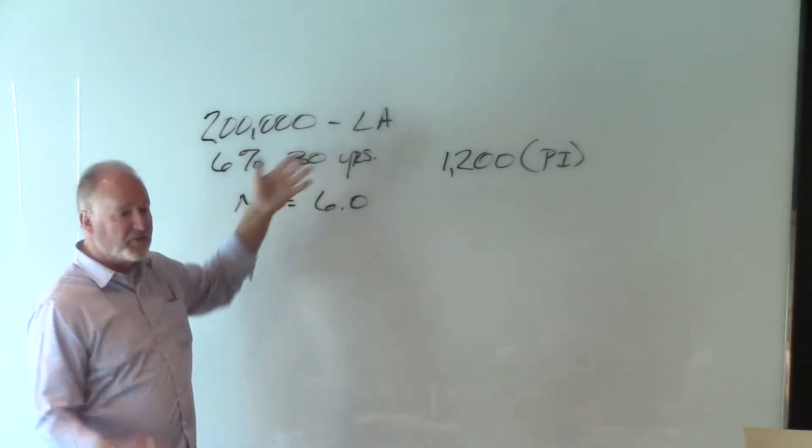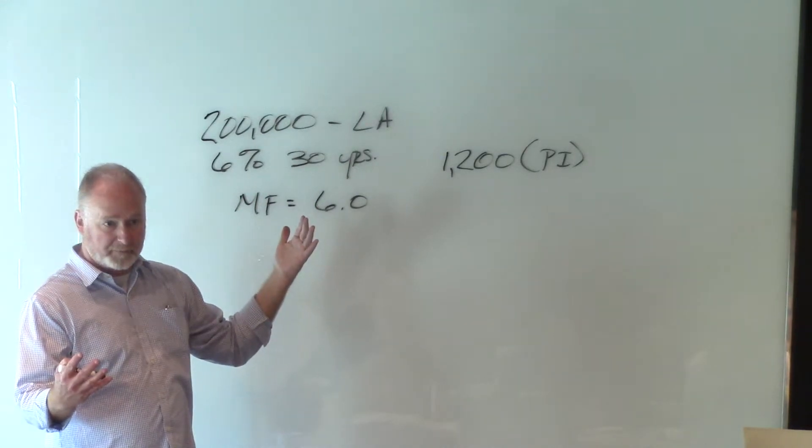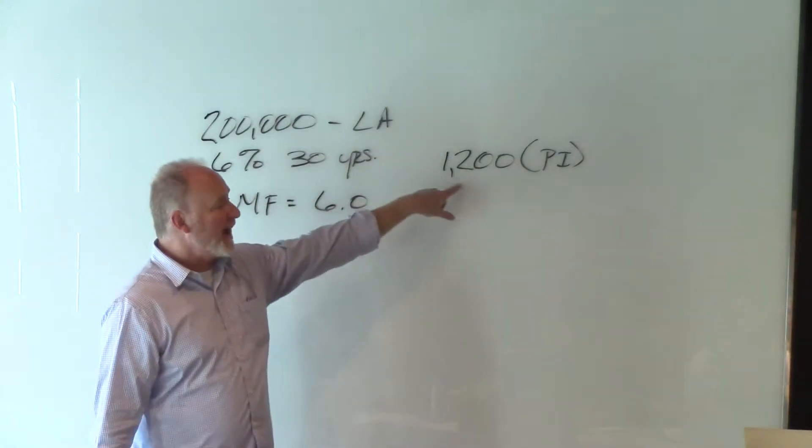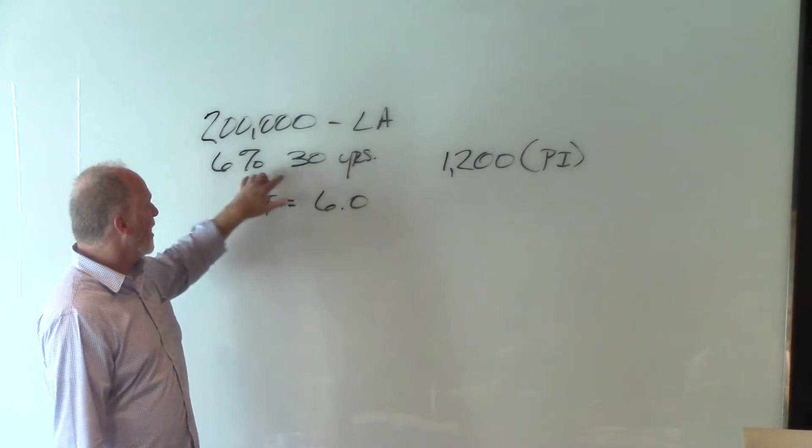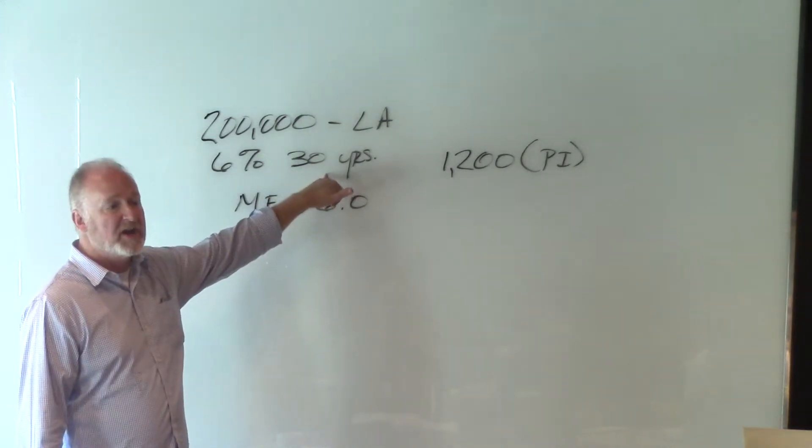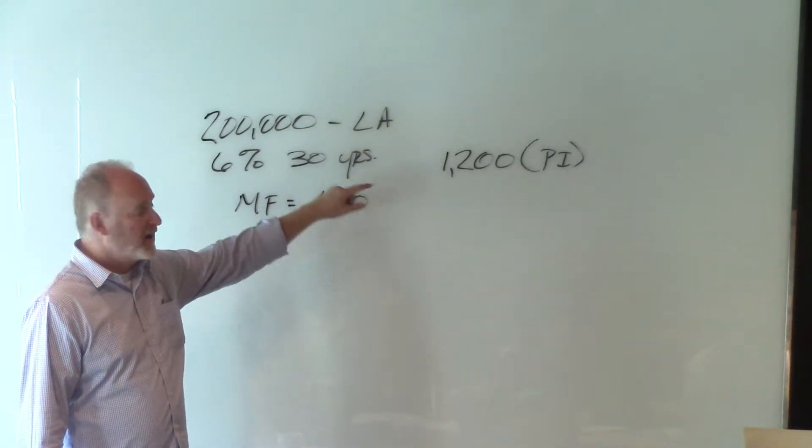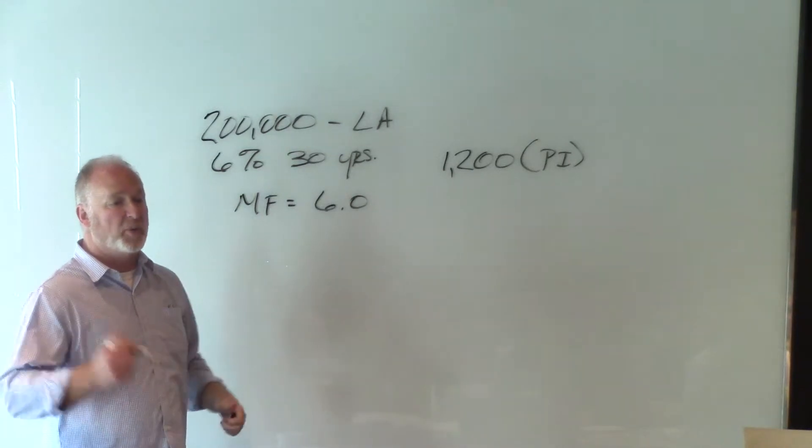Your loan amount is $200,000. That's how much you originally borrowed, right? You're paying it back at $1,200 per month over 6% 30 years. So here's my question to you. How many times are you going to make that $1,200 payment?